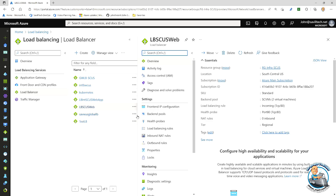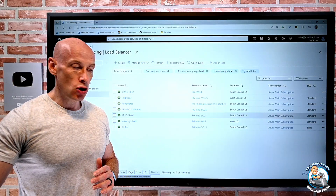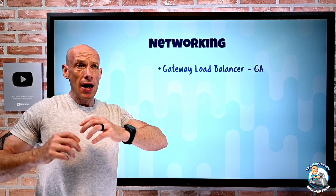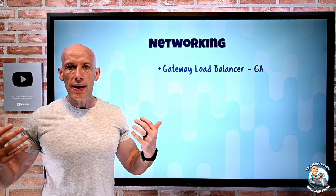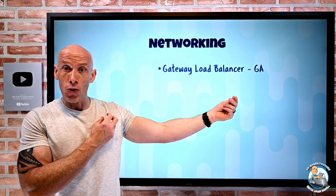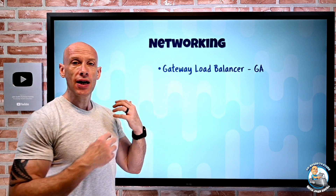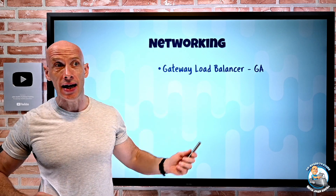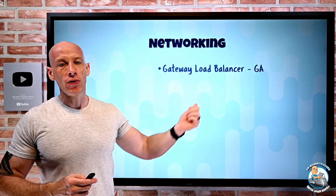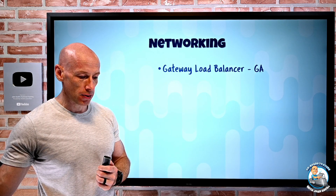On that target load balancer, all you have to do is in the front-end configuration, add that you want to use this gateway load balancer and select the one you've created. It is a true bump in the wire — no modifications to IP layouts, completely transparent to your target service. You don't have to use UDRs, you don't need a network connection to the network where the gateway load balancer sits. It could be in a different subscription or a different tenant. There's no VNet connectivity required. This is a fantastic feature, now GA — if you're using NVAs, this is how you want to integrate them.